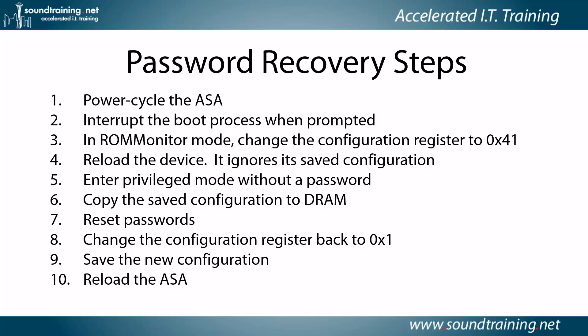Once you're in privilege mode, you'll copy the saved configuration into DRAM, then reset the passwords to a known value. You'll change the configuration register back to the default of 0x1, save the new configuration, reload the ASA, and be done. Pretty straightforward, as you'll see in the demo.